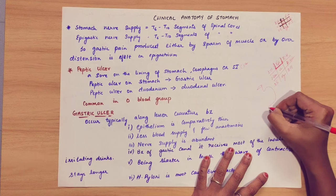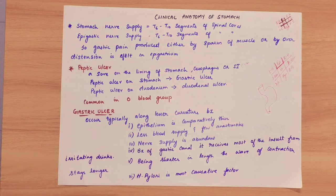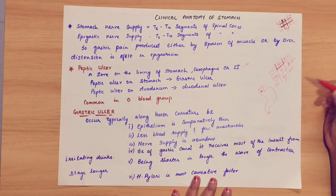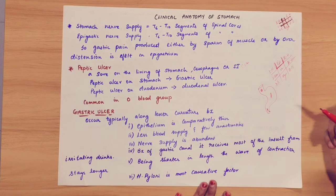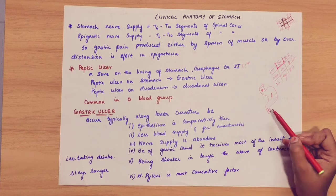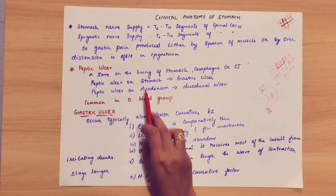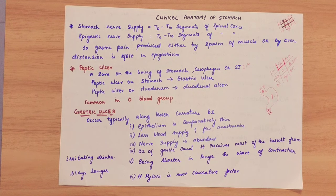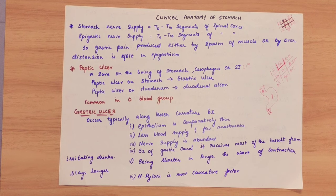The stomach is here, and this is the first part of the duodenum. In the epigastric region, there is a chance of getting peptic ulcer. The stomach, esophagus, or small intestine, including the first part of the duodenum, can be affected. In blood group O patients, peptic ulcer is more common. Peptic ulcer occurs typically in the lesser curvature.